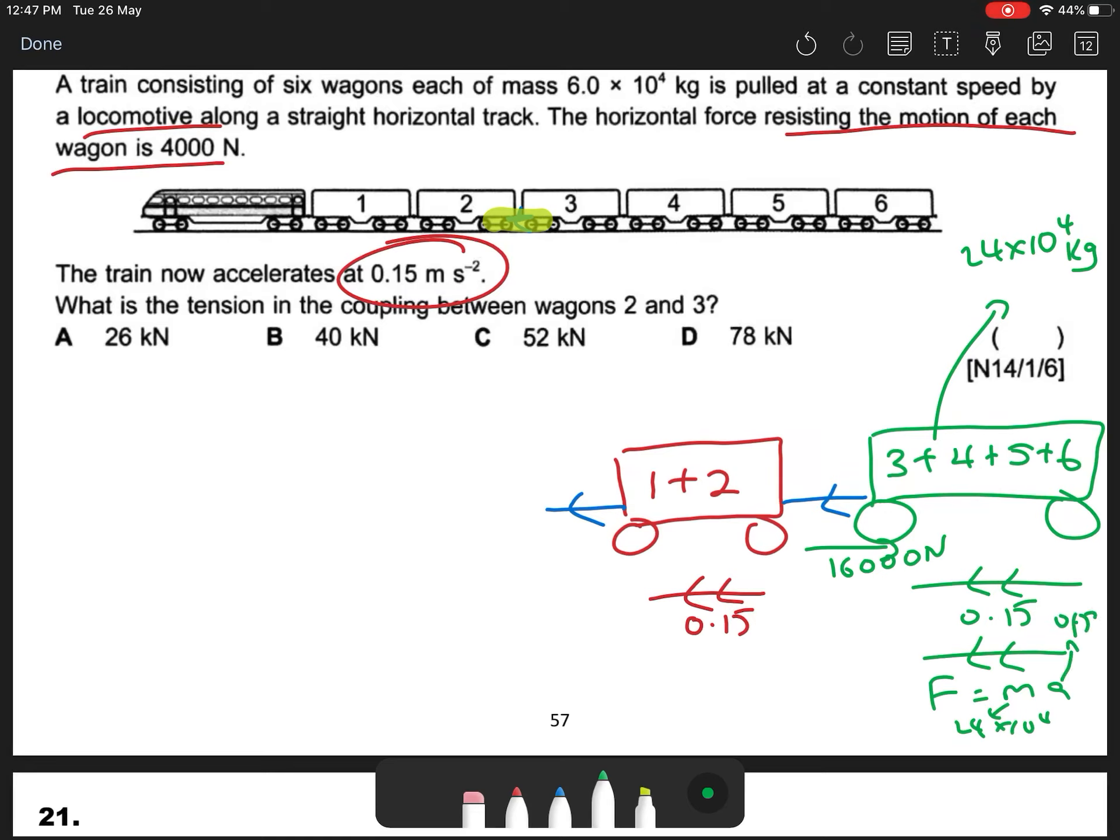So I will get 24 × 10^4 × 0.15. So I will get 36,000 Newton.